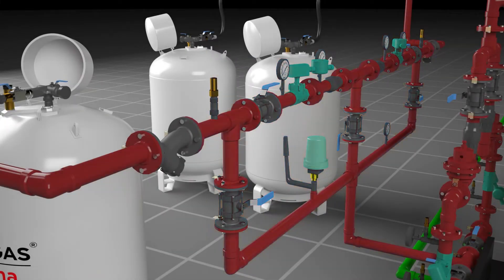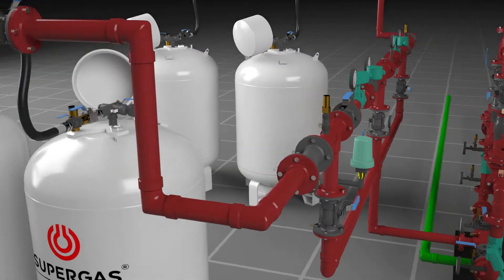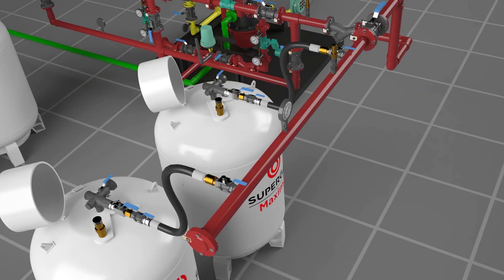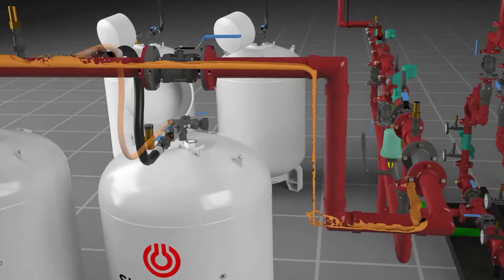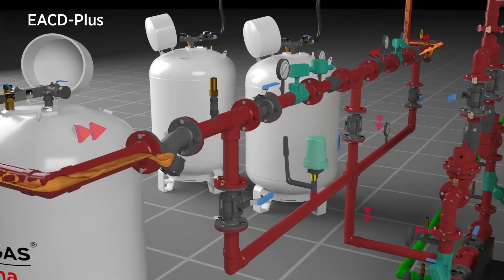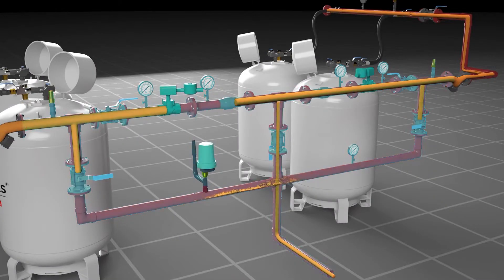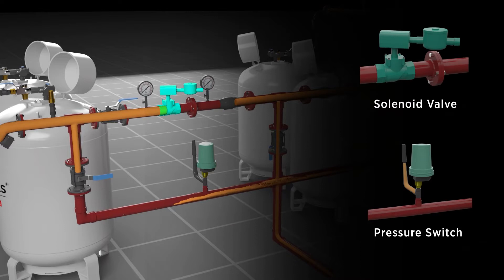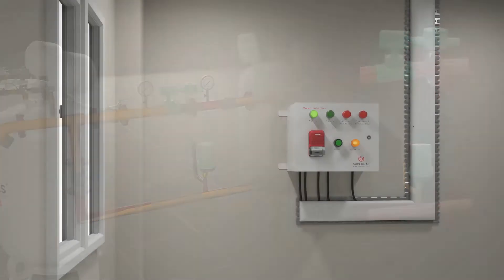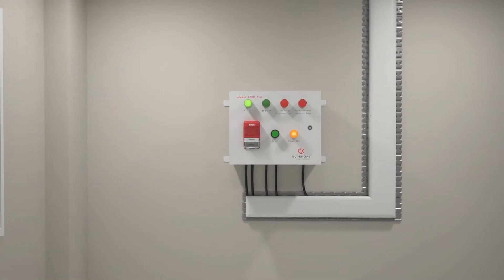Let us see the working of the EACD Plus system in an LPG Maxima Installation of 450 kg cylinder. Pressurized liquid LPG from the cylinder flows through the manifold and enters the Electronic Automated Changeover Device EACD Plus. EACD Plus employs a combination of solenoid valves and pressure switches for this changeover.